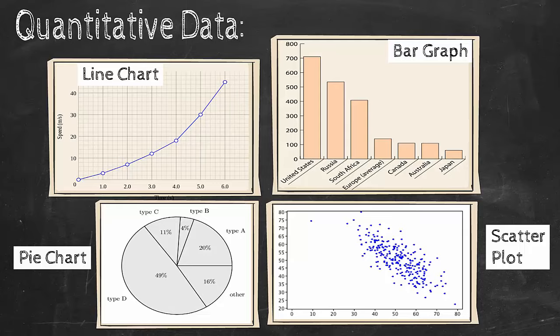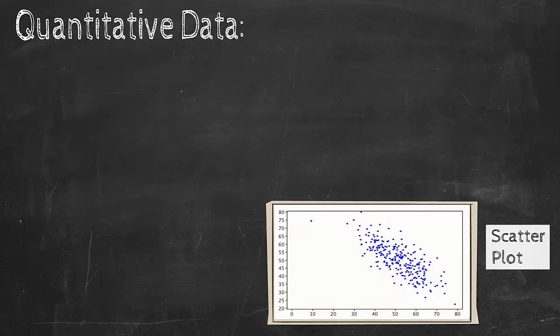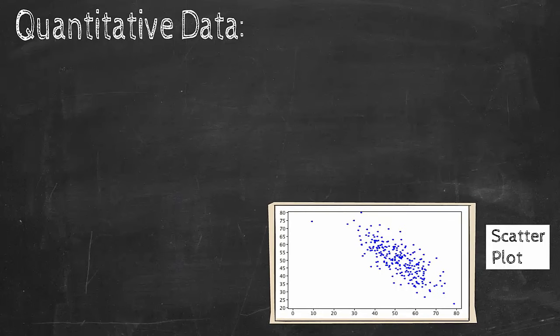A line chart or graph is used to illustrate the difference of two quantities on the x and y axes, with a line connecting each of the data points to show the degree of difference if it's increasing or decreasing. A scatter plot is like a line chart, however, without the line connecting the data points.